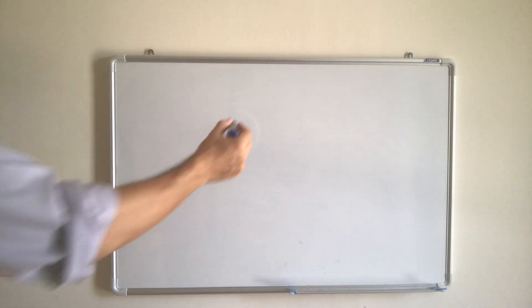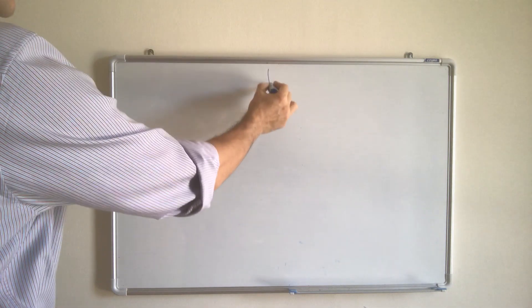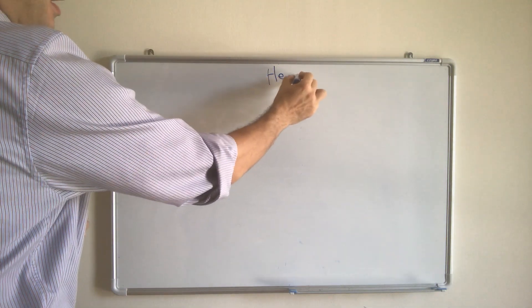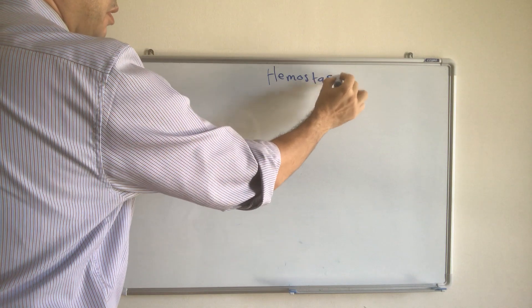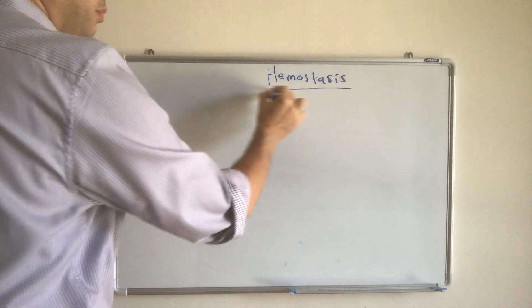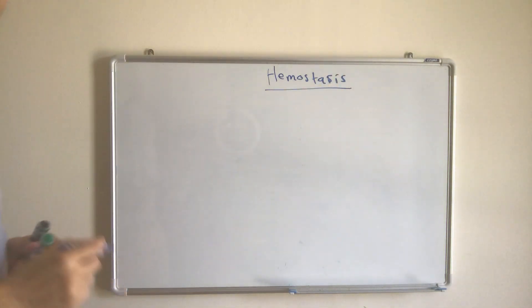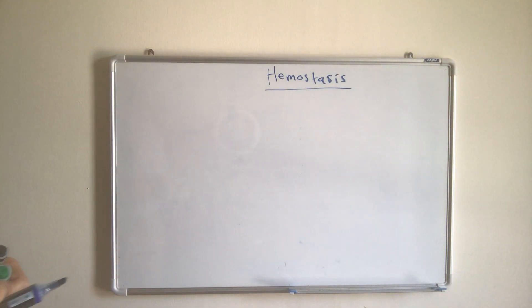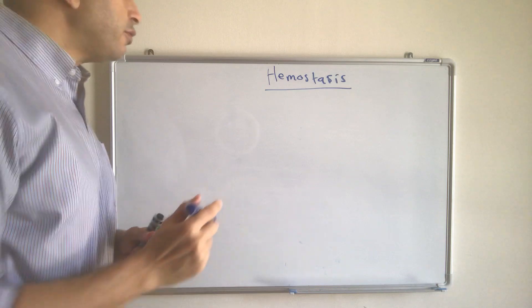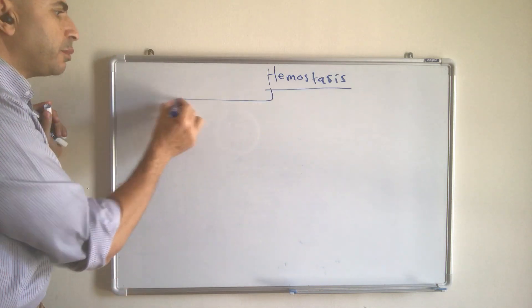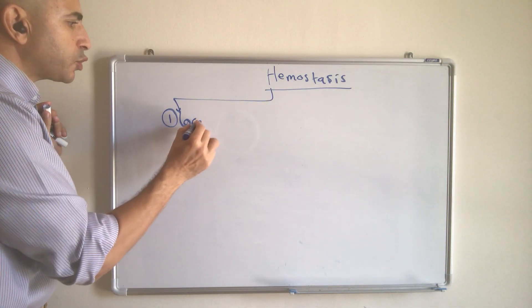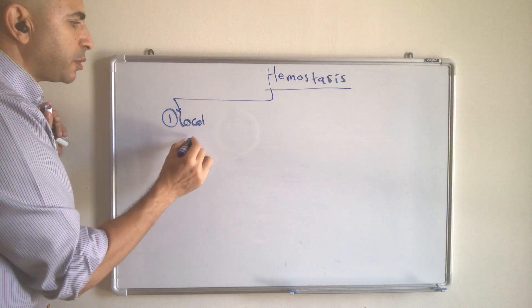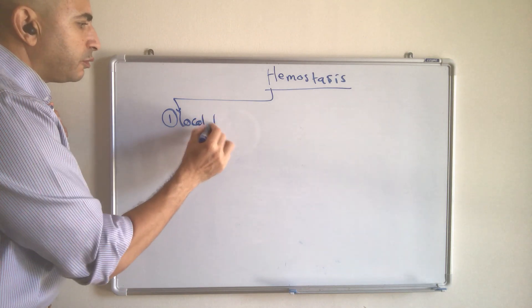Hemostasis is defined as the mechanism produced by the blood and blood vessels to stop bleeding. In hemostasis, the first step is local vascular constriction.